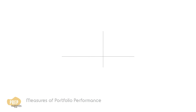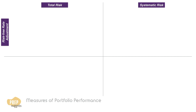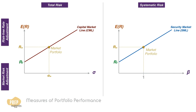The four measures we are going to learn can be divided into four quadrants based on total risk or systematic risk only, and based on risk-free rate adjustment or market risk adjustment. These are best illustrated with the Capital Market Line and the Security Market Line.